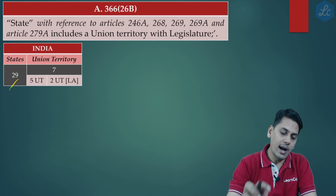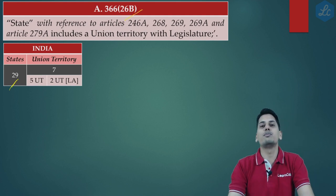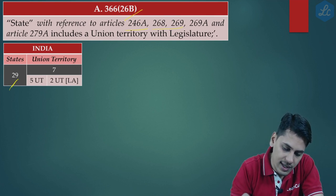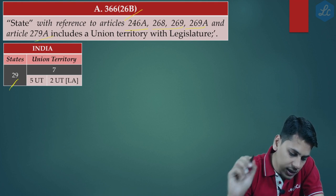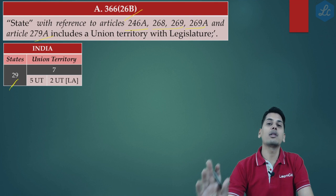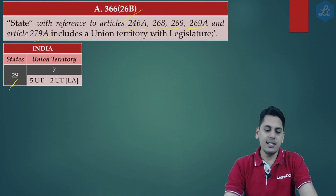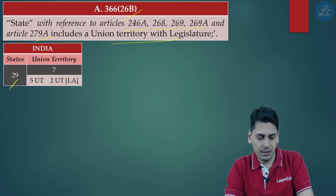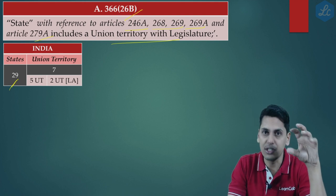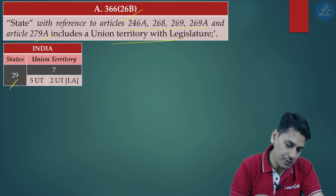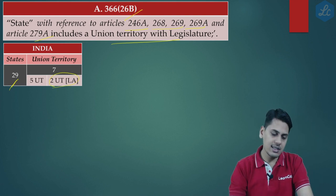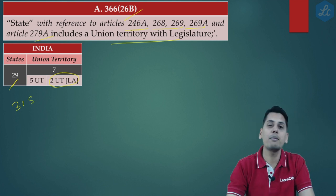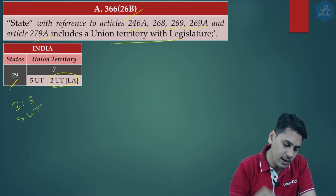Article 366 clause 26B of the Constitution of India states that 'state,' with reference to Articles 246A, 268, 269, 269A, and 279A — which means for the purpose of GST — includes a union territory with legislature. So prior to reorganization, for the purpose of GST, India comprised 29 plus 2 union territories with legislature, totalling 31 states, and 5 union territories.